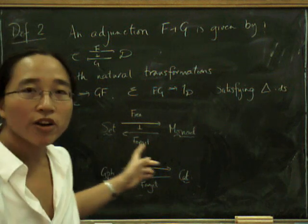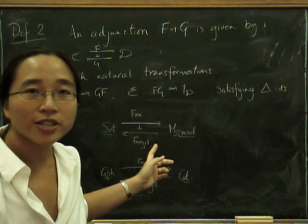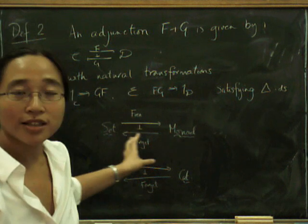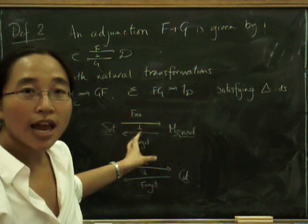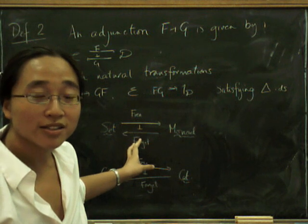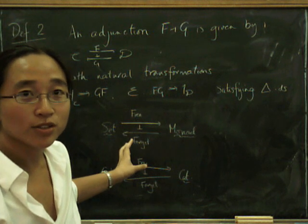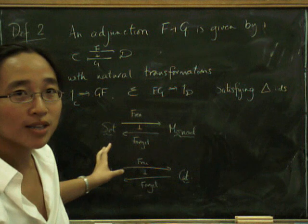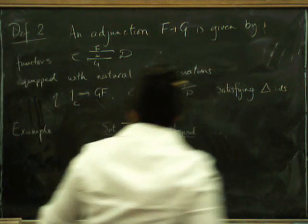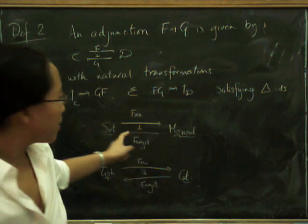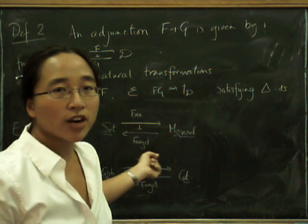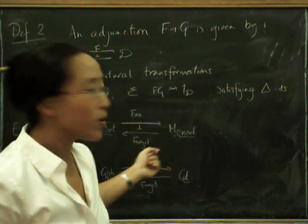Whereas here we can say that if it's left adjoint to a forgetful functor, that is a completely definable notion of free. You might be wondering how you remember which is left and which is right. It's very easy: 'left' has four letters, and so does 'free' — so free is a left adjoint. Moving swiftly on: why were we talking about the free monoid construction before? Because it gave rise to a monad for us.